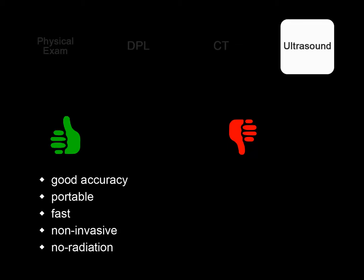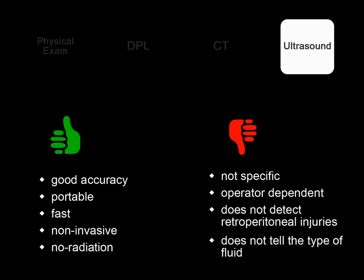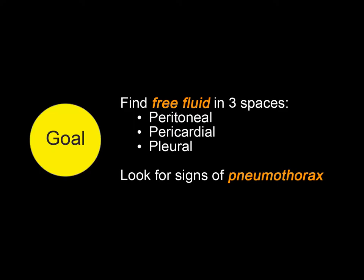Ultrasound has some limitations too. It does not tell you the type of free fluid. In the trauma setting, we assume this free fluid is blood, till proven otherwise. The goal of EFAST is simply detecting blood in the three main spaces — the peritoneal, pericardial, and pleural spaces — and in addition, evaluating the lungs for signs of pneumothorax.